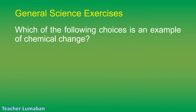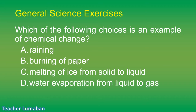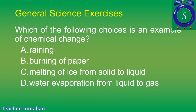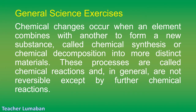Which of the following is an example of a chemical change? Letter A: raining. Letter B: burning of paper. Letter C: melting of ice from solid to liquid. Letter D: water evaporation from liquid to gas. The correct answer is Letter B: burning of paper. Chemical changes occur when an element combines with another to form a new substance (chemical synthesis) or breaks down into more distinct materials (chemical decomposition). These processes are called chemical reactions and in general are not reversible except by further chemical reactions.